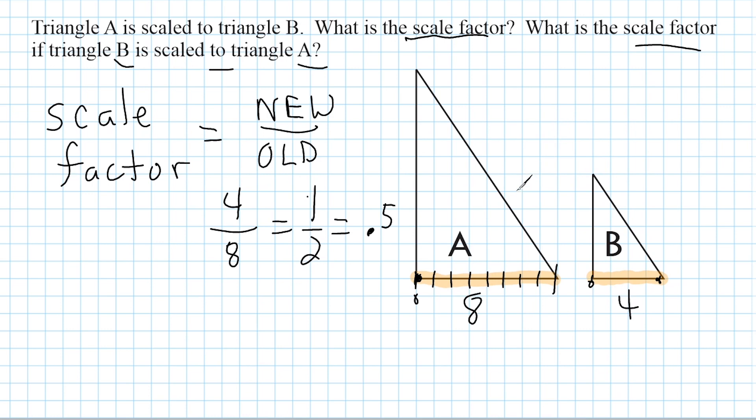Now, let's see what happens when we scale going from B to A. We can see that is an enlargement, which means our value or scale factor will be greater than 1. So once again, we're going to start with the new, but this time our new is going to be a base of 8, and we are going to divide that by our old, which is 4. And 8 divided by 4 is 2. So we would say if we are scaling from B to A, our scale factor is 2.